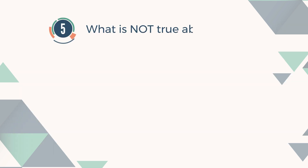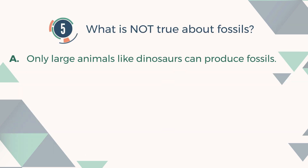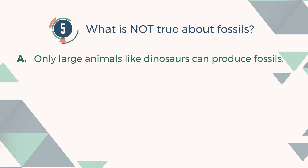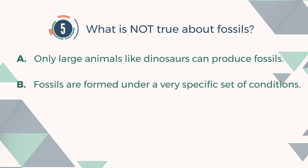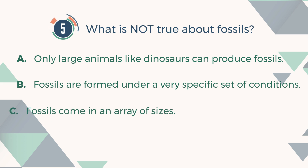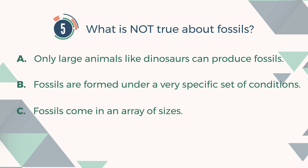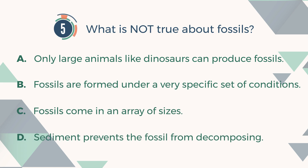Number 5. What is not true about fossils? A. Only large animals like dinosaurs can produce fossils. B. Fossils are formed under a very specific set of conditions. C. Fossils come in an array of sizes. D. Sediment prevents the fossil from decomposing.